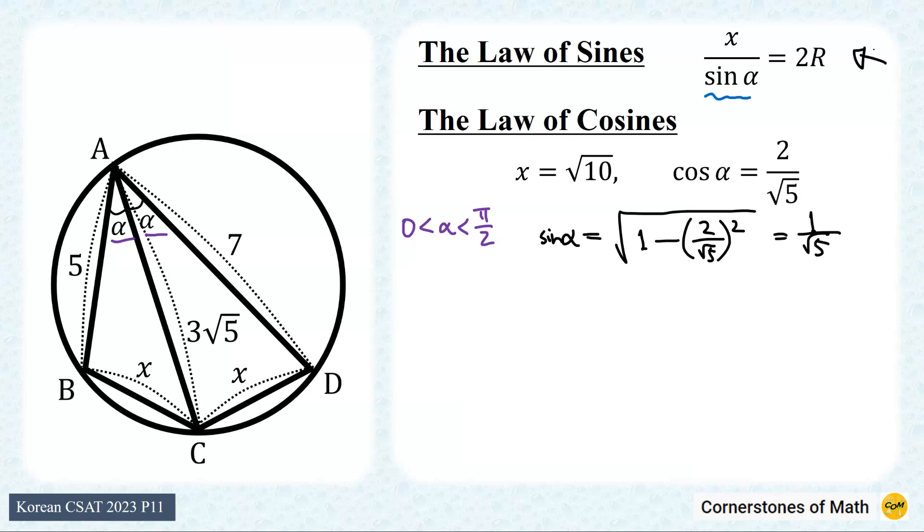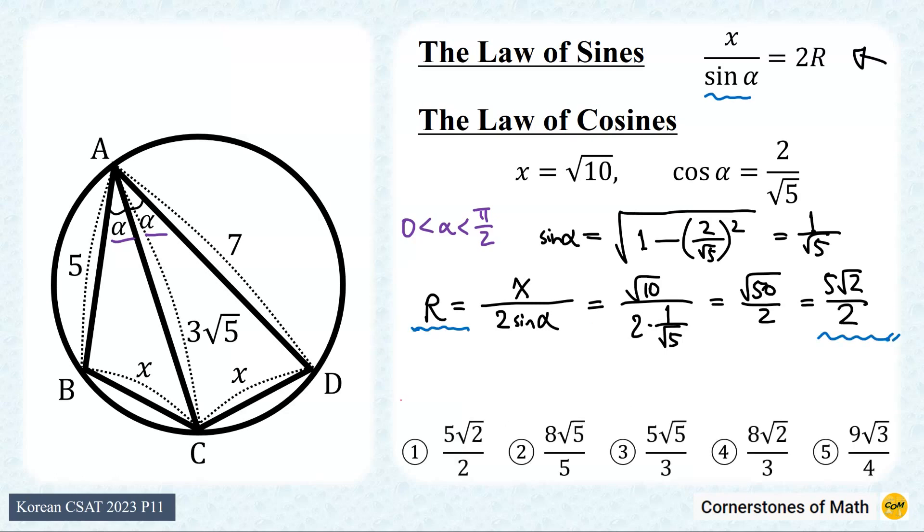Therefore, from this relation obtained from the law of sines, radius r equals x over 2 sine alpha. So square root of 10 over 2 times 1 over square root of 5, which is square root of 50 over 2, which is 5 square root of 2 over 2. And from our multiple choice here, we know the correct answer is choice 1.